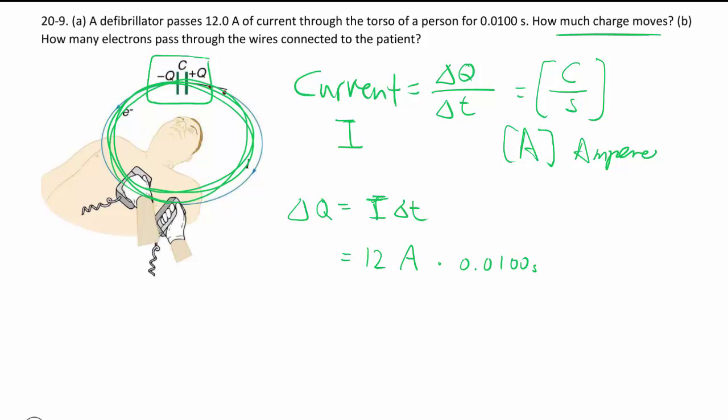Because you need that big jolt to restart the heart, but not so much that you fry the person. Multiplying that, you get—and this is against Coulombs per second, so we'll get Coulombs in the end—and that's going to be 0.12 Coulombs.